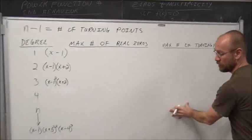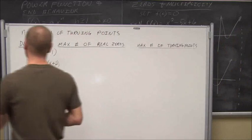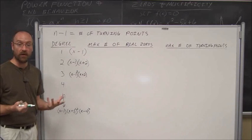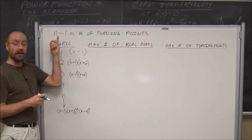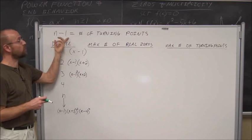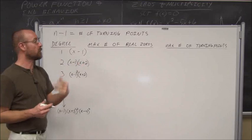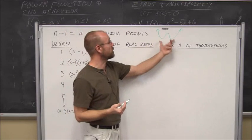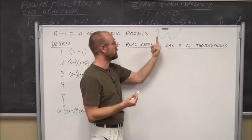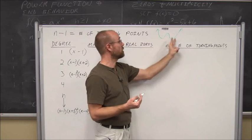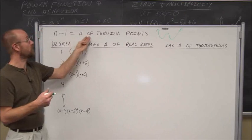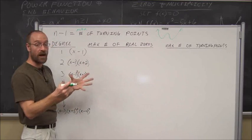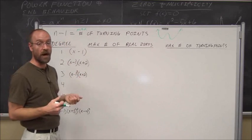One thing we saw in the previous example was turning points. The degree of a polynomial tells us about its behavior between zeros. Specifically, n minus 1 — where n is the highest power — gives the maximum number of turning points. In the previous degree-6 example, the graph went from decreasing to increasing (one), increasing to decreasing (two), and decreasing to increasing (three) — three turning points. It won't necessarily have that many, but it could.